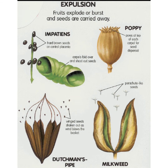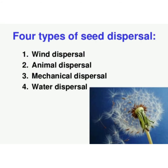The next method is dispersal by explosion or explosive mechanism. Some plants have a special method of scattering their seeds by their own force when the fruit ripens. Plants like balsam, peas and beans disperse their seeds by explosion and scatter them in all directions. The four methods of seed dispersal are: dispersal by wind, dispersal by water, dispersal by animals, and dispersal by explosion.